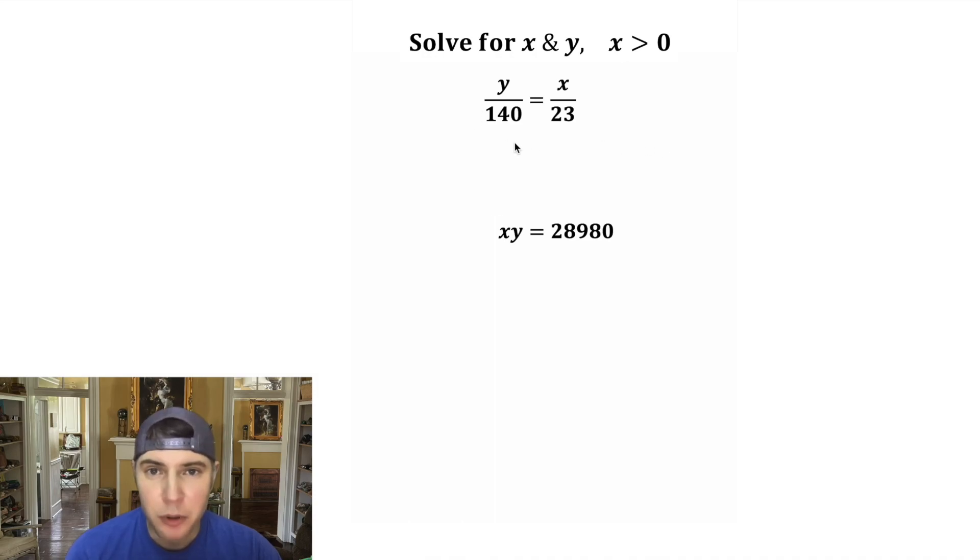First step, let's multiply both sides of this equation by 140. On the left-hand side, these will cancel, so we just have y. And on the right-hand side, we'll have 140x over 23. So we now have x in terms of y, so we're ready to do some substitution.